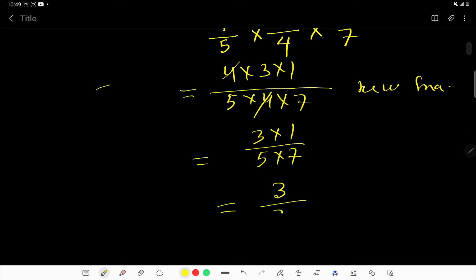You cannot get a factor which will divide this 3 and 35 completely, right? So this is the answer. You cannot reduce this further. This is the answer.